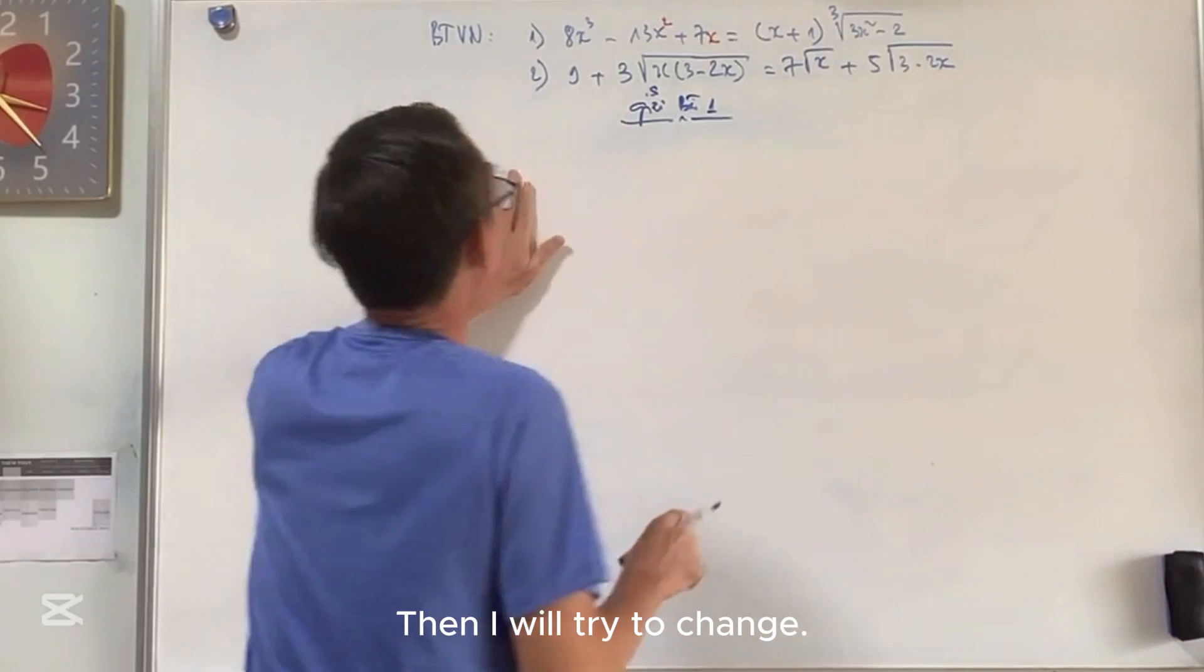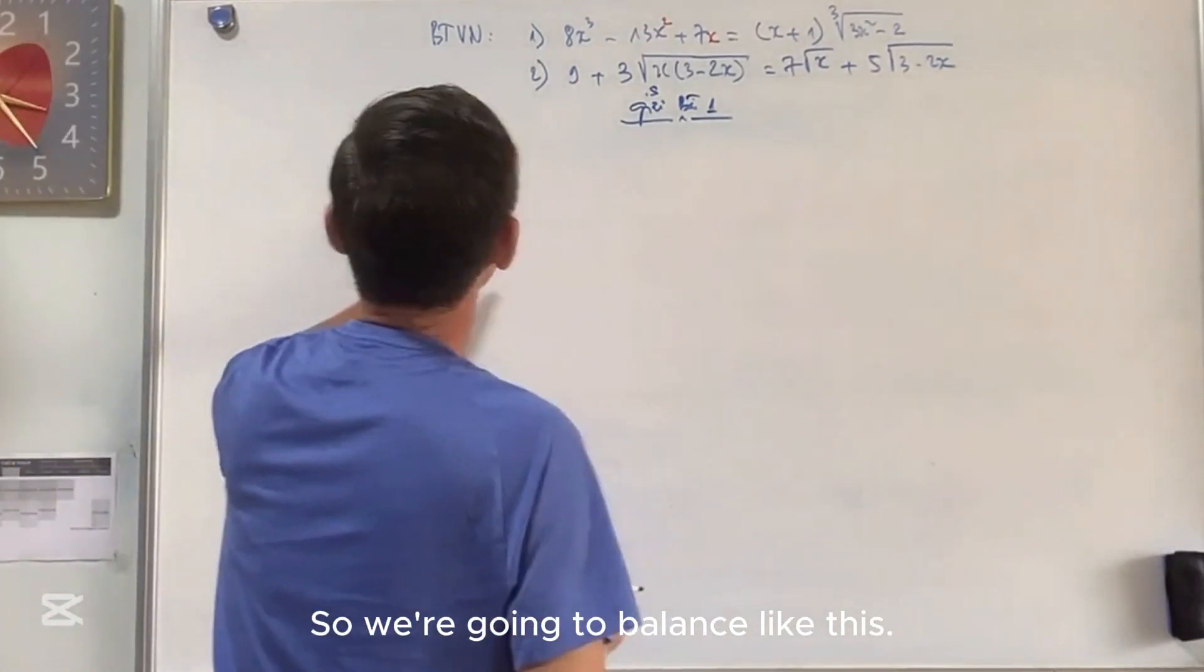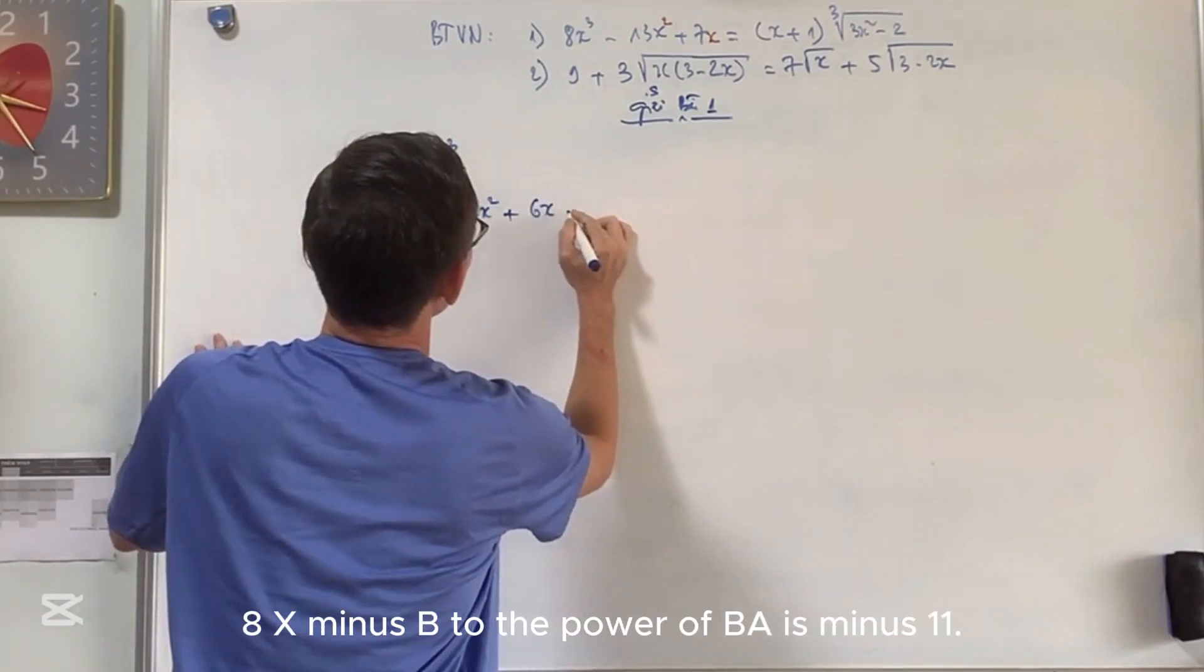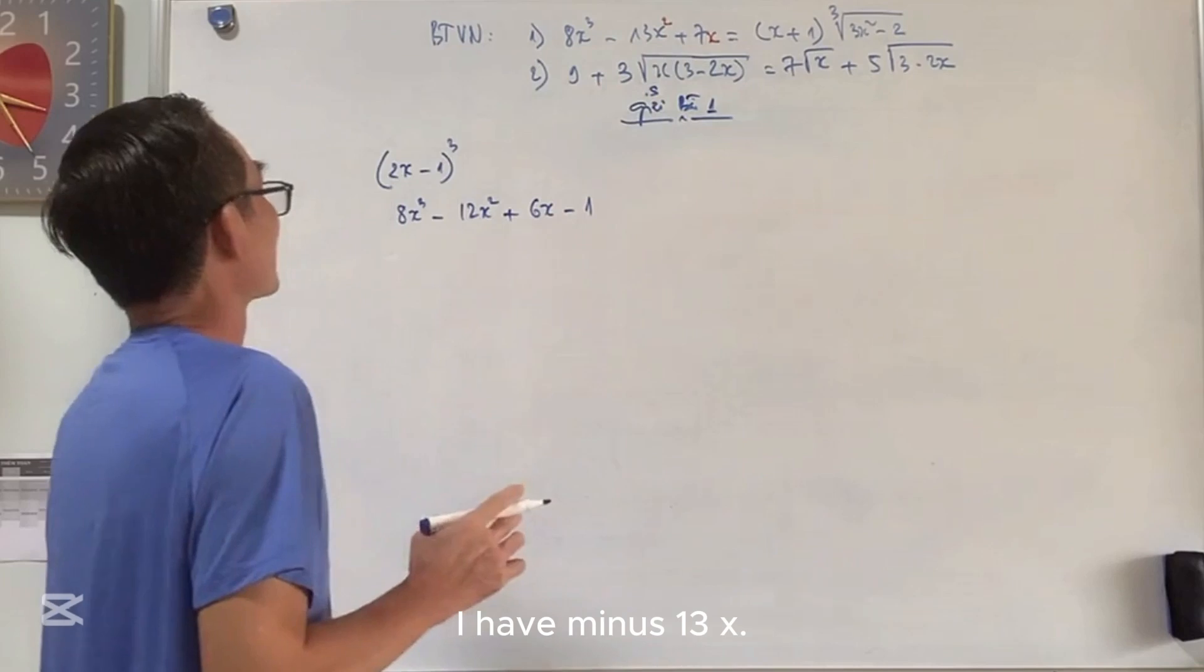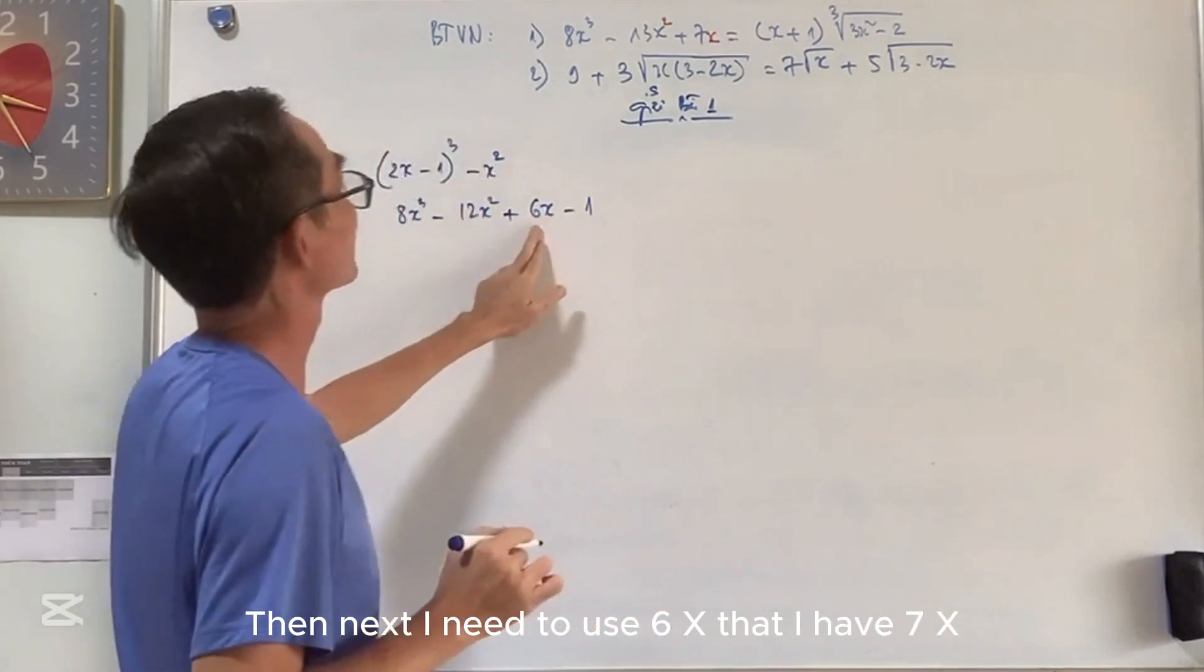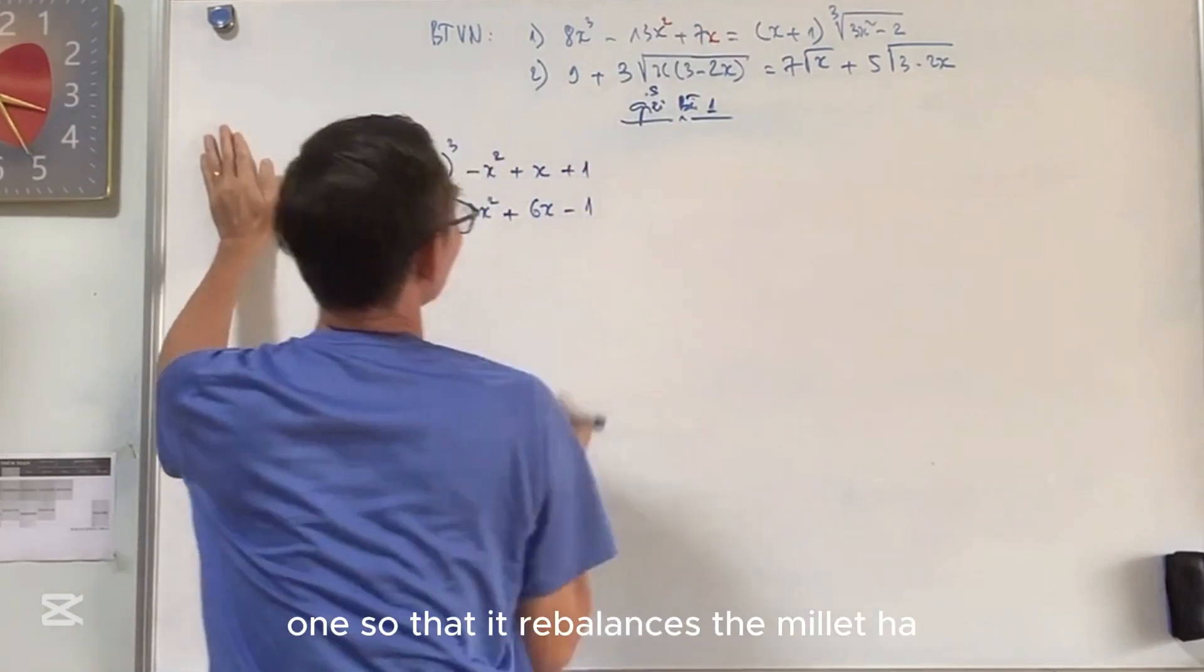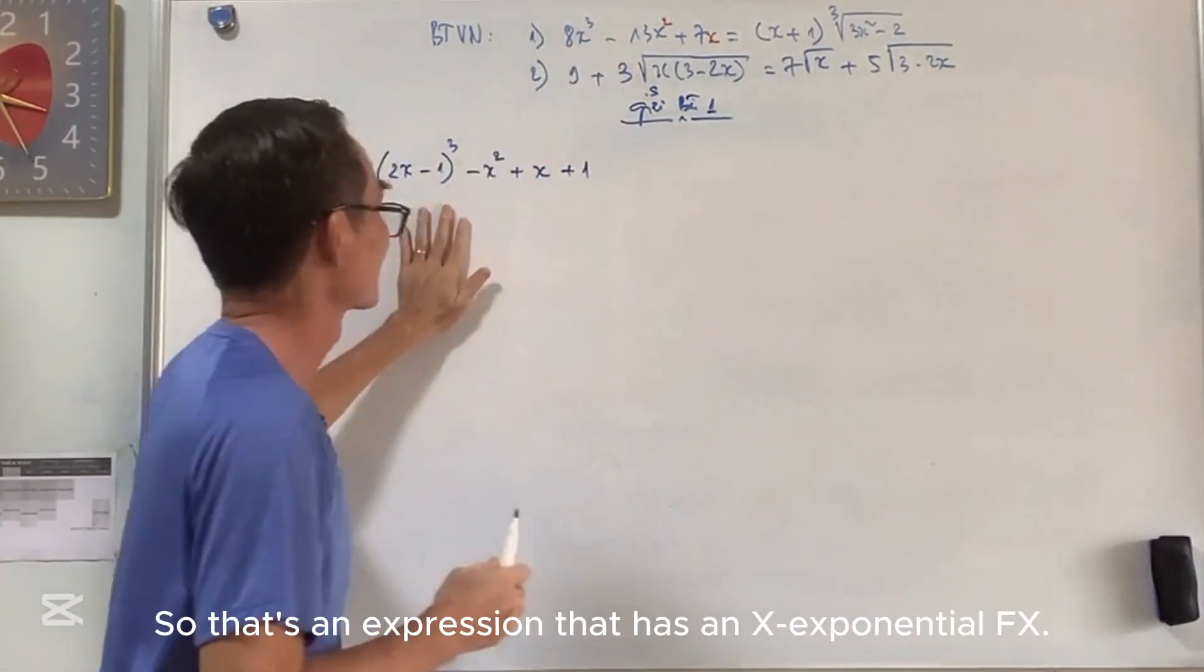So choose 1 for easy. Then I will try to change this left hand side. An expression if it looks like this: 2x minus 1. So we're going to balance like this. 2x squared minus 12x squared, 6x, 8x minus 11. If I have this I will balance it. I have minus 13x but I use minus 12. Then how many are left? The rest minus x. Then next I need to use 6x, I have 7x. Then I'm left with x. And here I need to use minus 1. I don't have any coefficients up here, so I have to add 1 so that it rebalances. So after doing a transformation, you've changed the left side to an expression that has an x exponential fx.